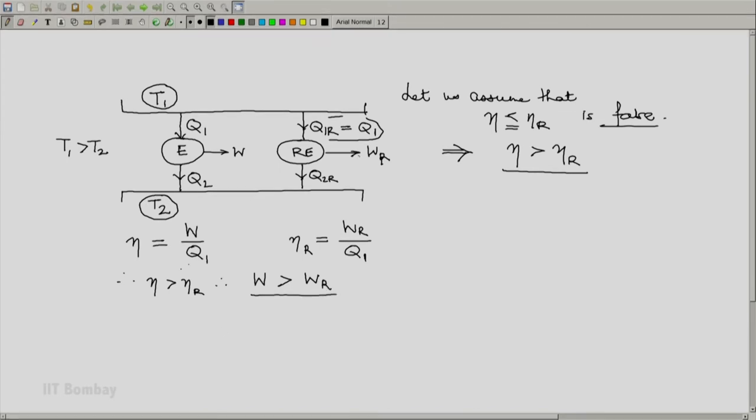And consequently, since the same amount of heat is absorbed, a larger amount of work is produced by this standard engine. Q2 must be less than Q2R.